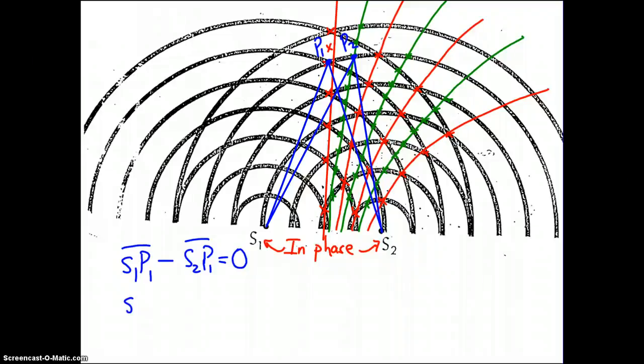And if I take the length of line segment S1 P2, and I subtract the length of line segment S2 P2, it turns out that that difference is equal to one-half the wavelength of the waves producing the source.